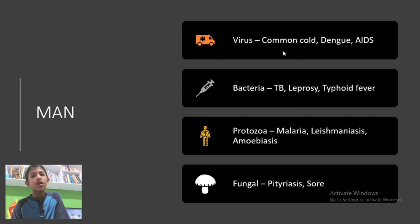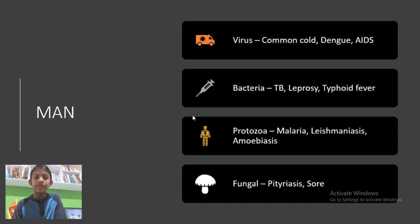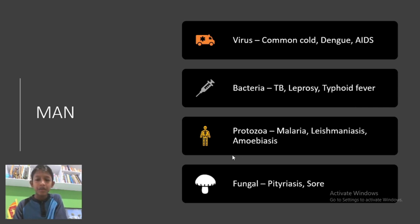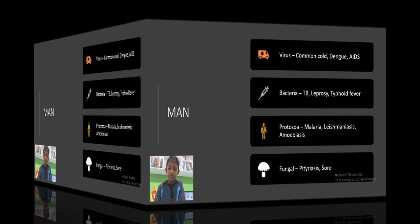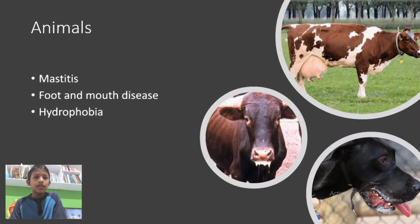In the viruses section we have common cold, dengue, and AIDS. In the bacteria section we have TB, leprosy, and typhoid fever. In the protozoa section we have malaria, Leishmaniasis, and Amoebiasis. In the fungal section we have Pityriasis and sores.